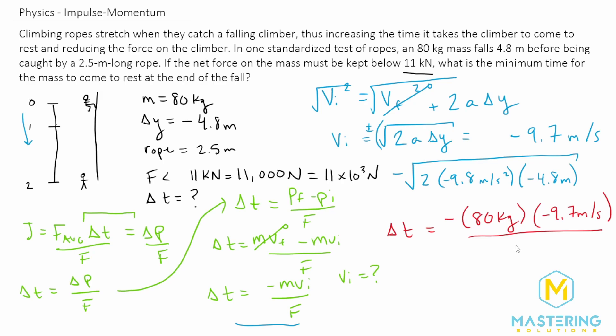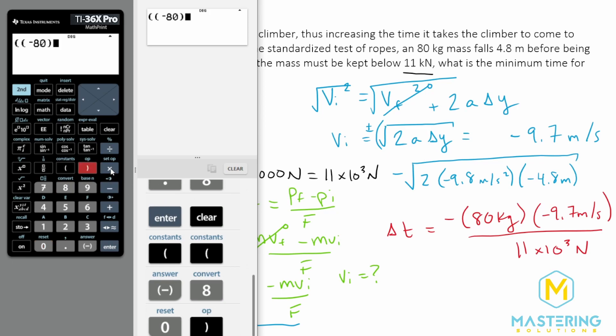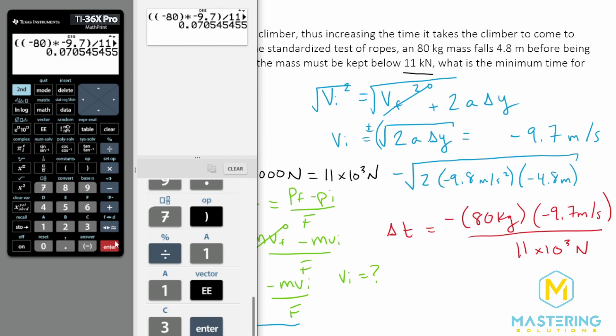Negative 80 times a negative 9.7, and divide all of that by 11 times 10 to the third newtons, and we get 0.071. So now hold on before you click away, because I want to point out a potential problem here.